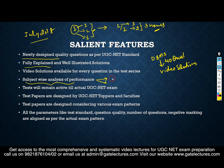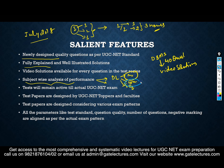In every subject-wise test you will have different sections. For example, in digital logic we have number systems, combinational circuits, sequential circuits, and so on. When you attempt a digital logic test and score well in one section but not another, the subject-wise analysis of every question paper will show you exactly where you stand.